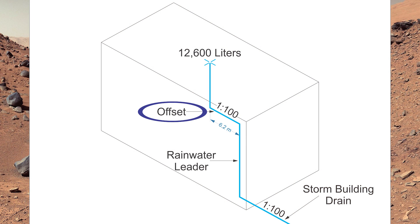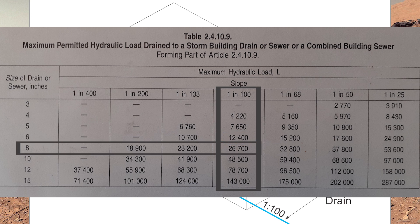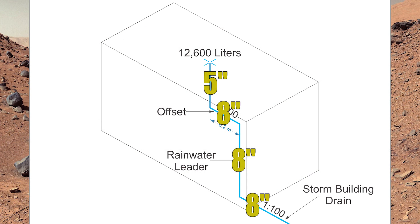But as soon as we get to that offset, we need to change to table 24109. Now we're at 1 in 100. I have 12,400 at six inch — but I've got 12,600, so that's not quite enough. Going down to the next value in the 1 in 100 slope column, I'm down to eight inches now. See how that changed everything just by changing the slope? Everything following that offset will be eight inches, including the next section of rainwater leader — you would never want to reduce that size, as it goes directly against plumbing code.